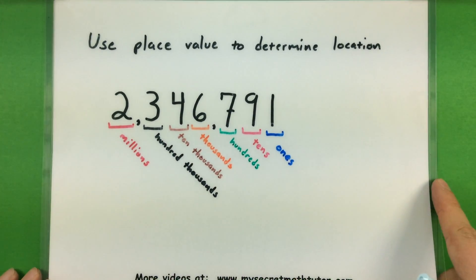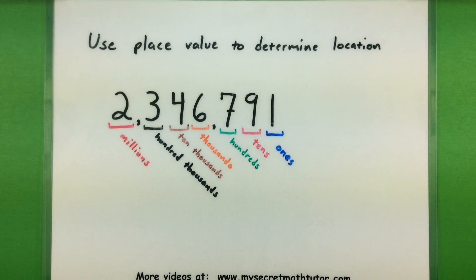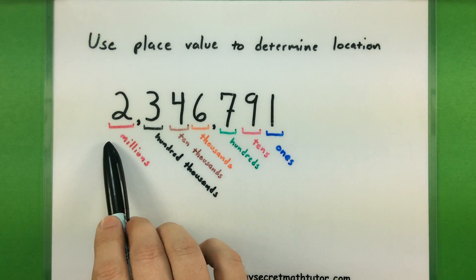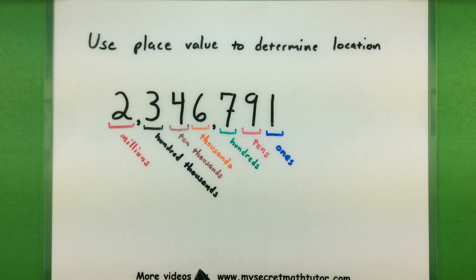Now in order to get through this process as painlessly as possible, it's important to know your place values because that will essentially tell you where to put the numbers. So for example, you should know that the two is in the millions place just because of where it's located.